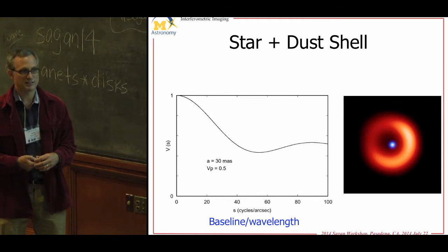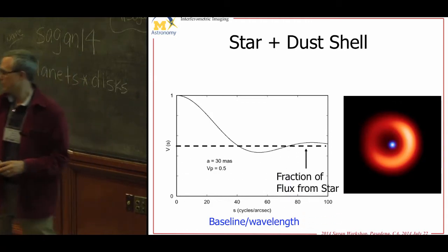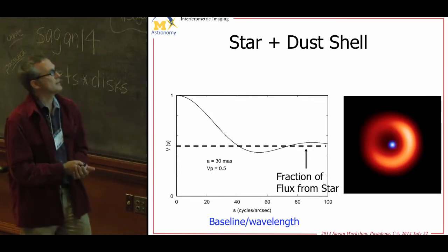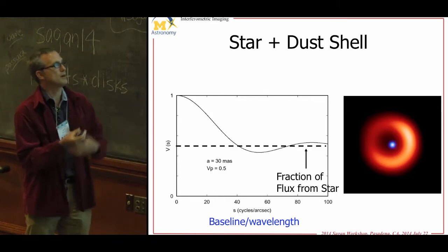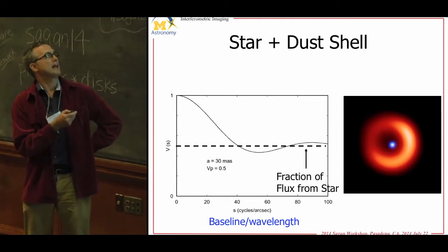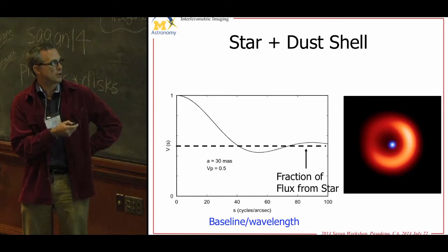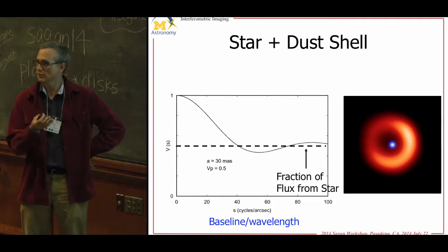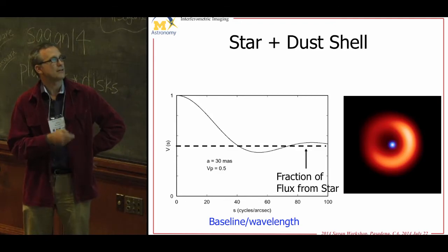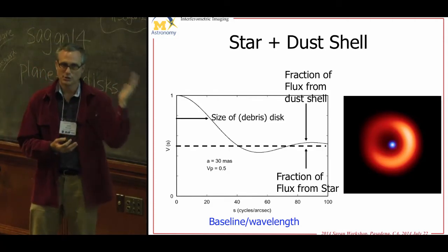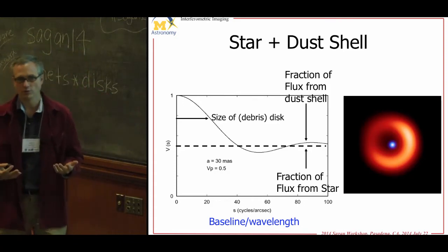In a more complex case you may have extended emission. Fourier transforms are linear — individual components add up in image space and their Fourier transforms add up too. For example, a star with a disk: at zero baseline it's unresolved. As you resolve it, you first resolve the disk because it's the largest thing. It oscillates due to ring-like structure, then asymptotes out. The level at which it asymptotes tells you the fraction of light coming from the unresolved star. If you aren't interested in imaging or don't have enough data, you can still do science by fitting to these functional forms.